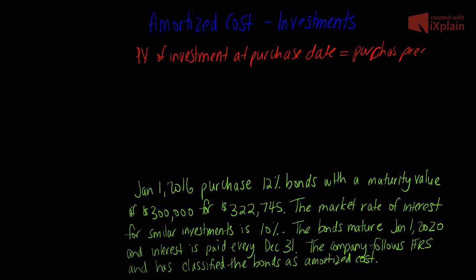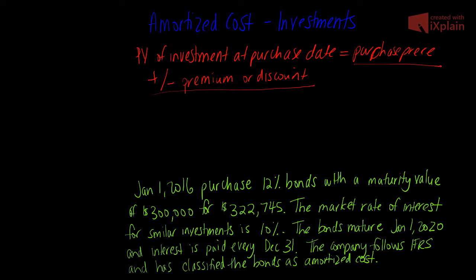This cost is adjusted by any amortization of any premium or discount as the bond progresses. So amortized cost is the original purchase price plus the amortization of any premium or discount, because premiums or discounts are amortized directly against the investments on our statement of financial position. Any amortization of the premium or discount will affect the amortized cost value.